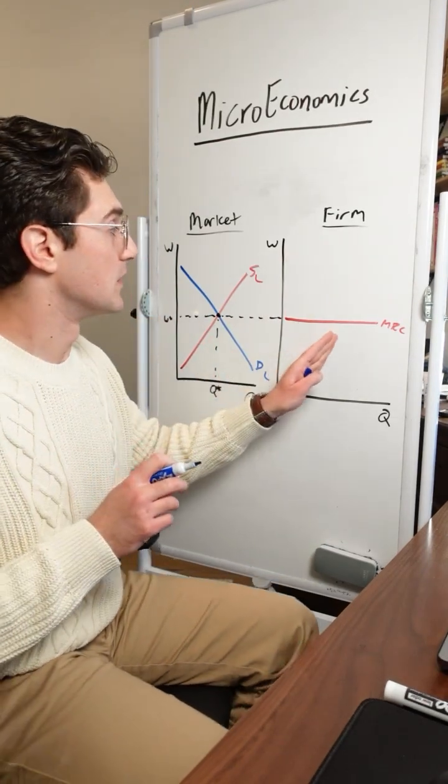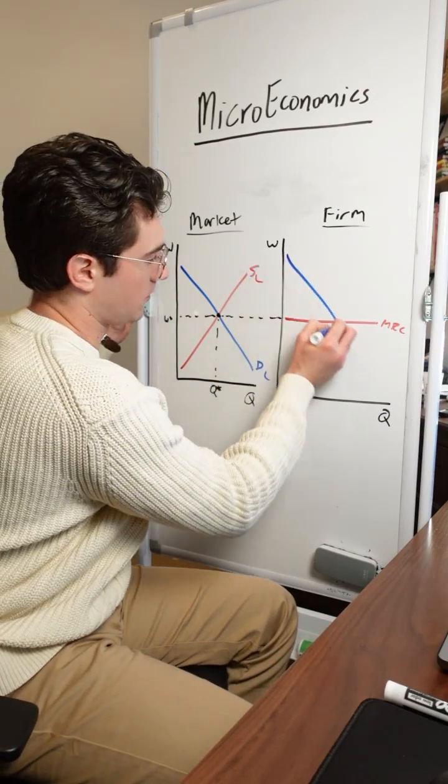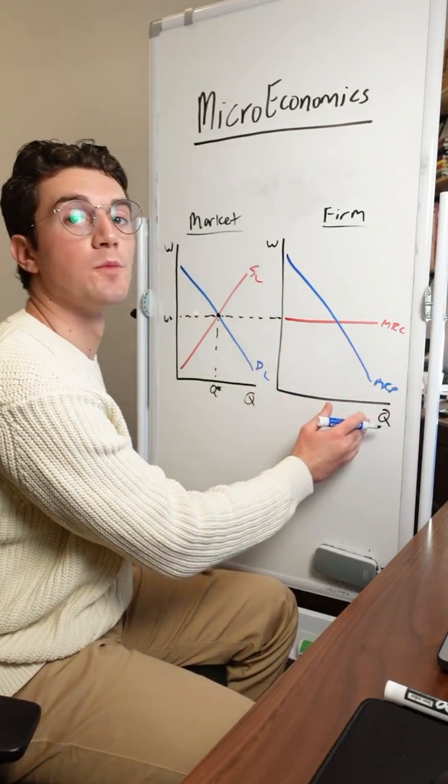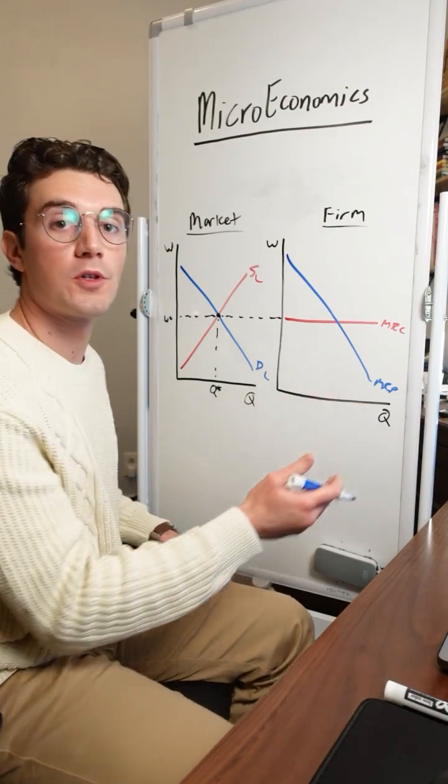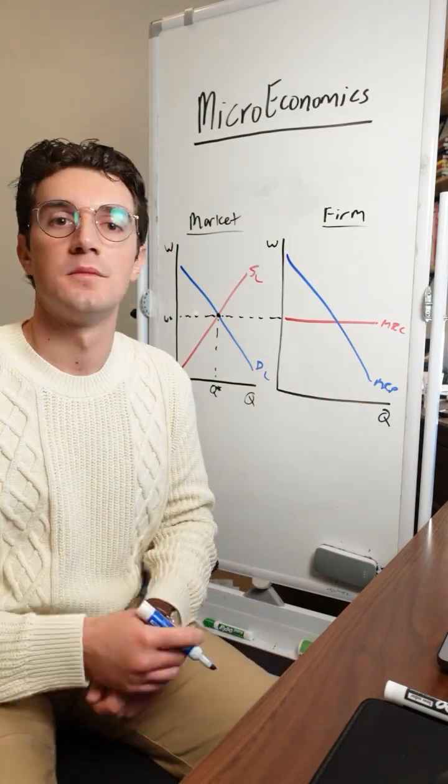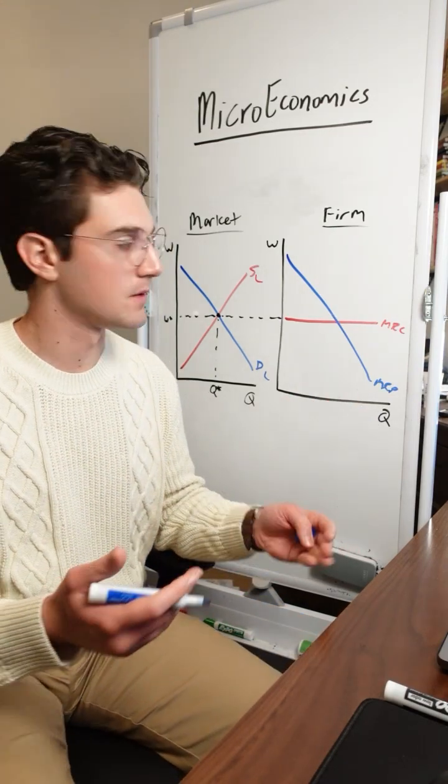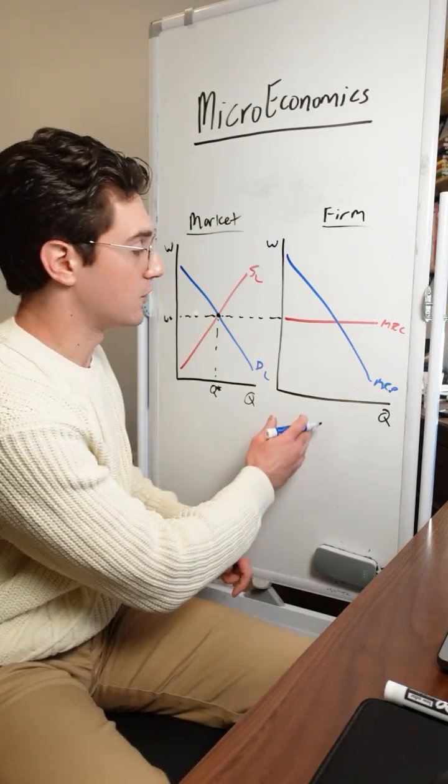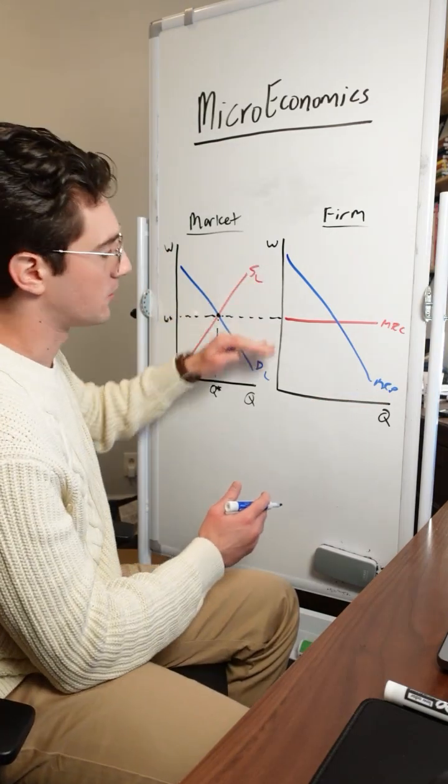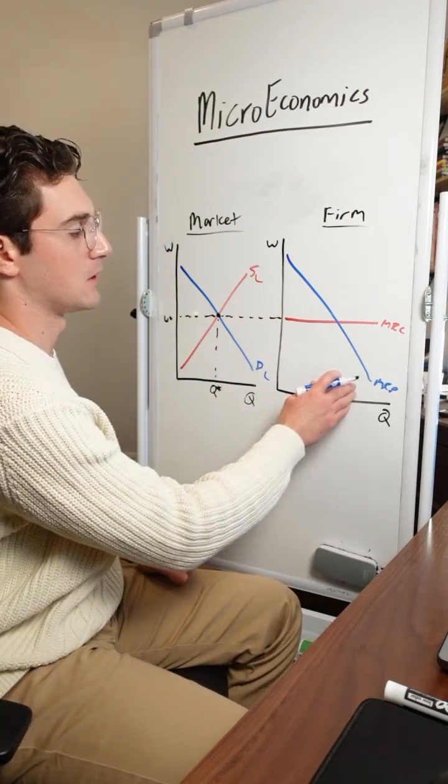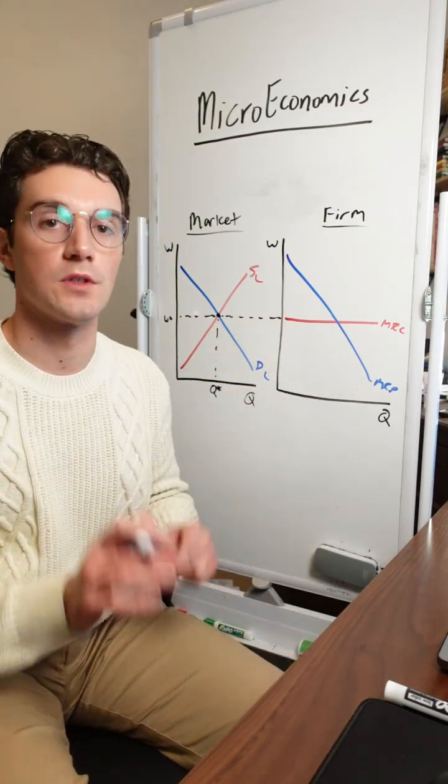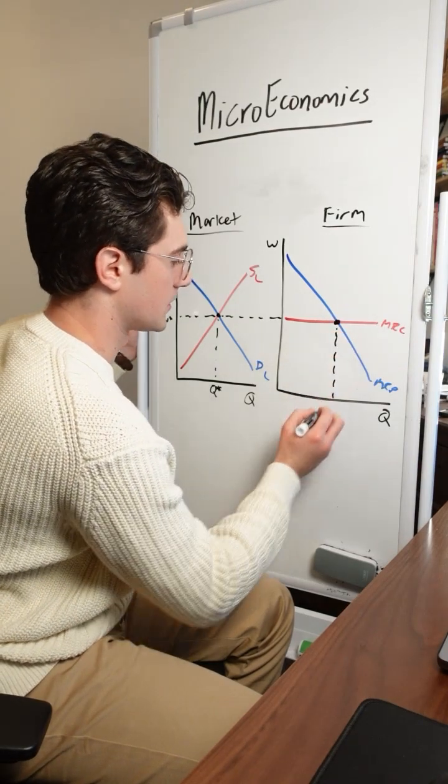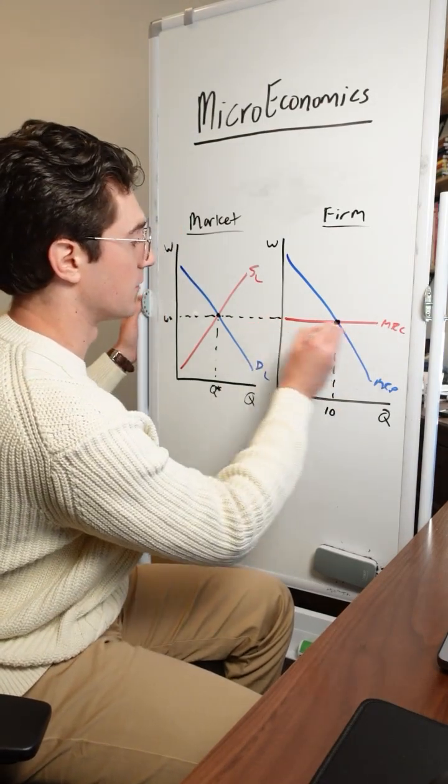And then in terms of the demand curve for the individual firm, that's the downward sloping marginal revenue product curve. Because as an individual firm hires more workers, each additional worker adds less and less output due to diminishing marginal returns. So the additional revenue, the marginal revenue from the product that each of those additional workers brings in decreases as we hire more workers. That's why the marginal revenue product curve is downward sloping. What this means is that this firm is going to be hiring this many workers, we'll call it 10 at this equilibrium wage.